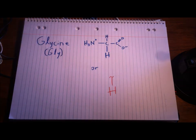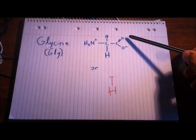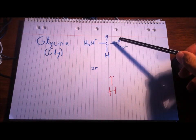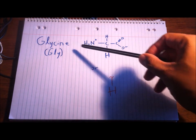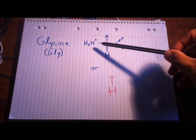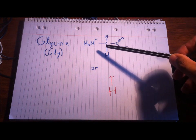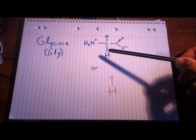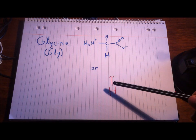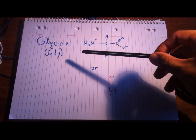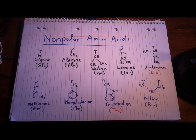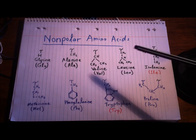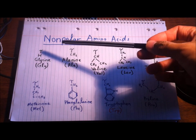Because amino acids all have this top part — the amino group and the carboxylic group — instead of writing it out over and over again, we just write out the R group, which is the only different part. For glycine, the R group is just a hydrogen.